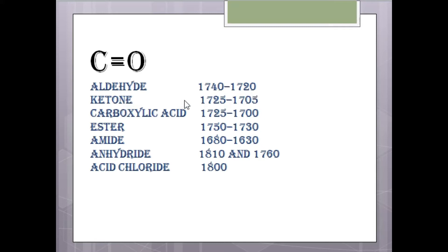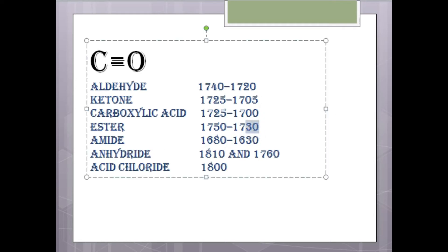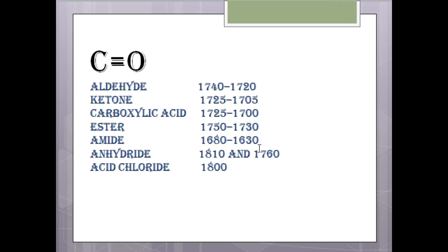In each functional group, the carbonyl region differs: 1740–1720 cm⁻¹ belongs to aldehyde; ketone shows peaks at 1725–1705; carboxylic acid at 1725–1700; ester at 1750–1730; amide at 1780–1730; and anhydride shows peaks at 1810 and 1760.